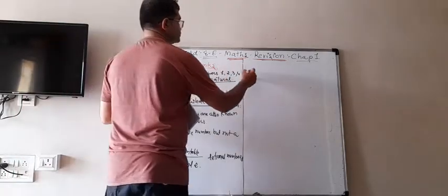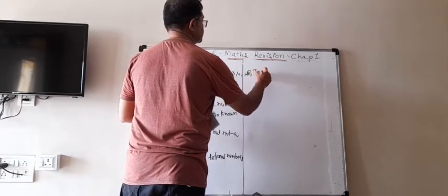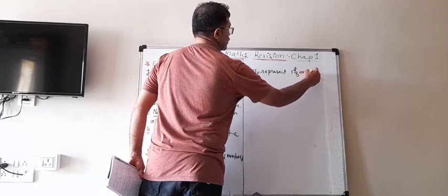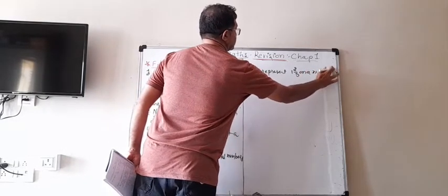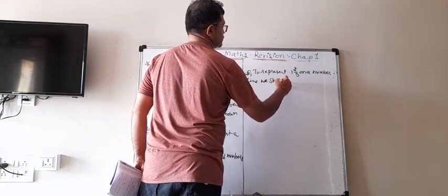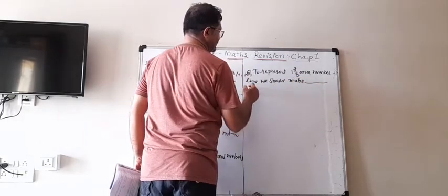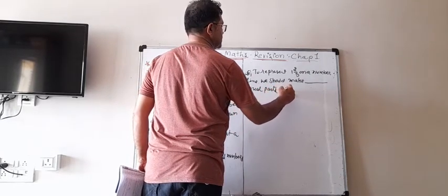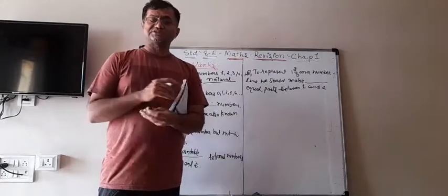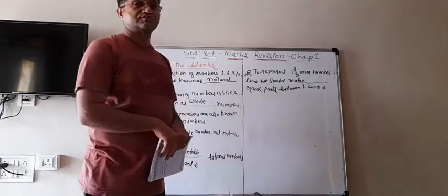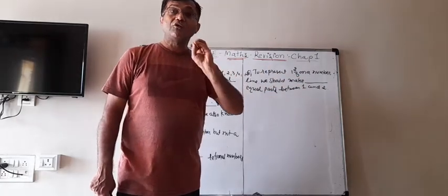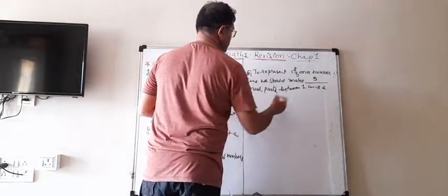Number 6. To represent the fraction 1 integer 2 upon 5 on a number line, we should make blank equal parts between 1 and 2. When we represent rational numbers on a number line, we have to make equal parts according to the denominator. The denominator here is 5. So we should make 5 equal parts between 1 and 2. The answer is 5.